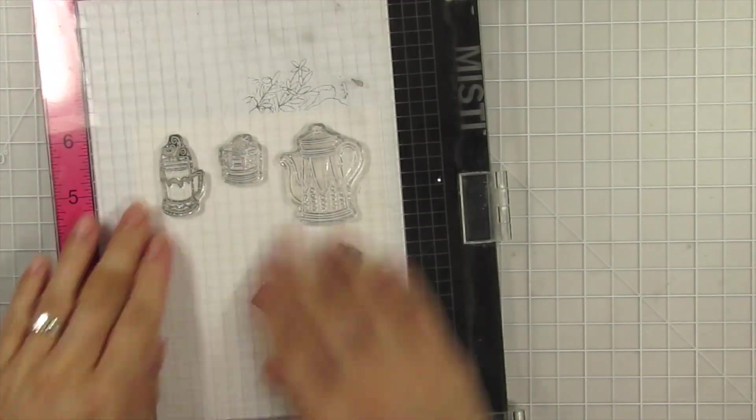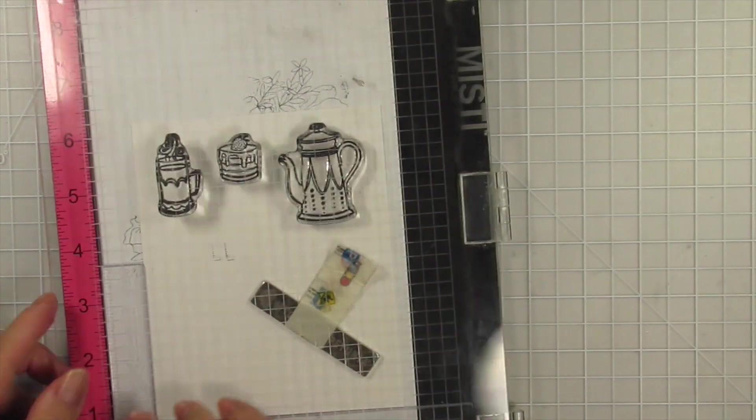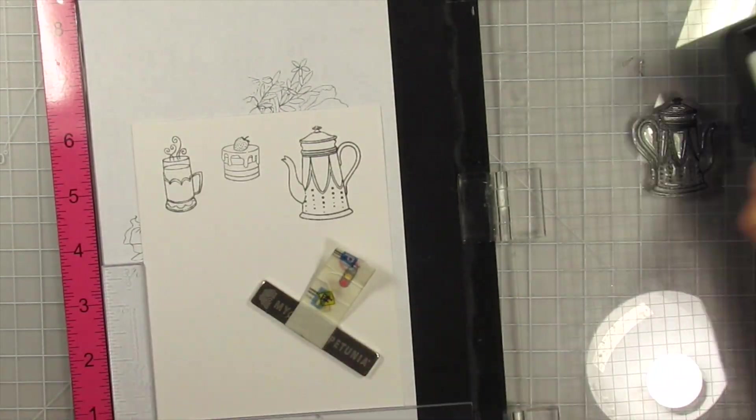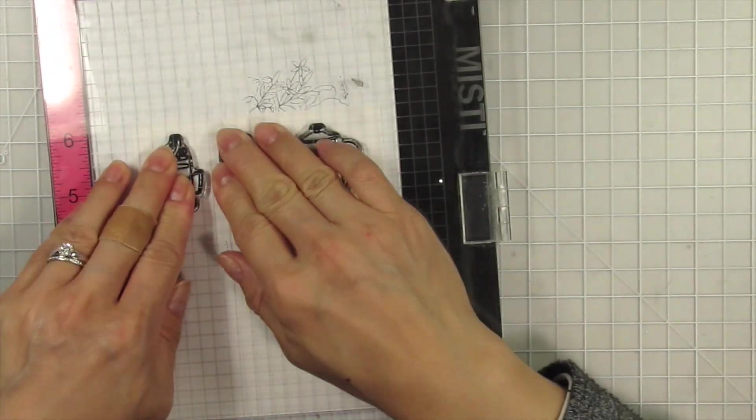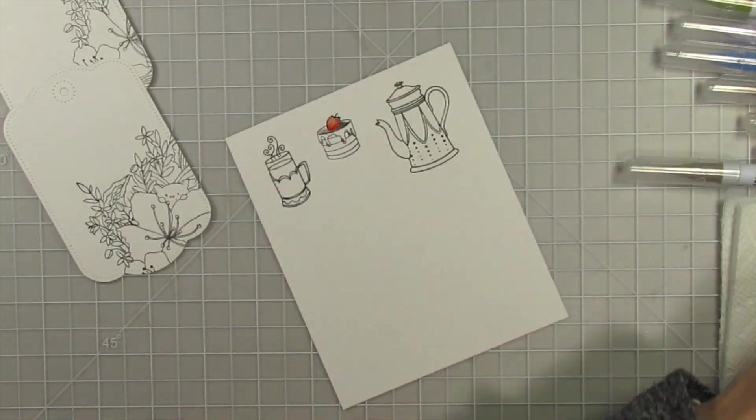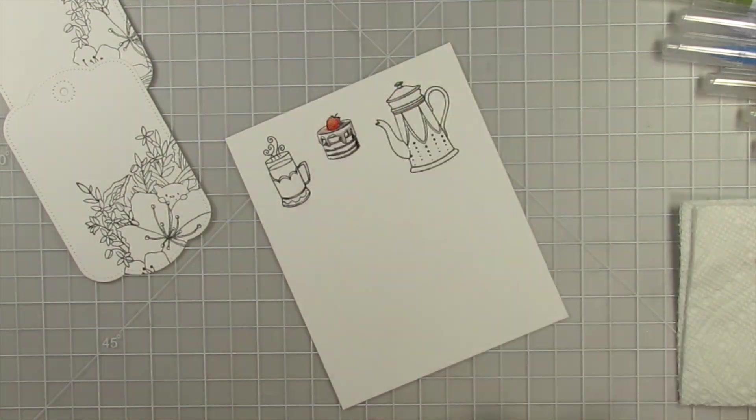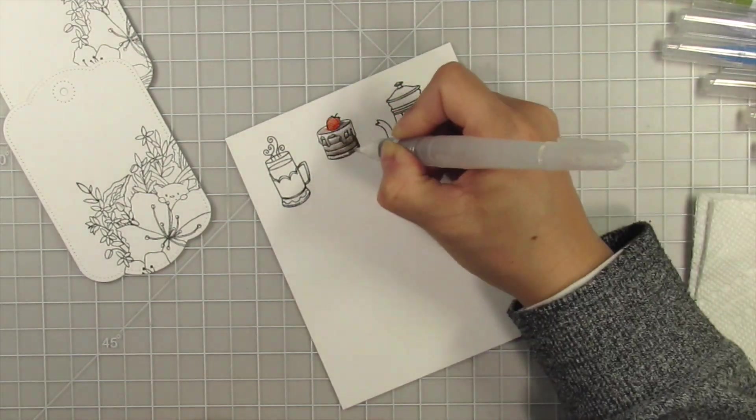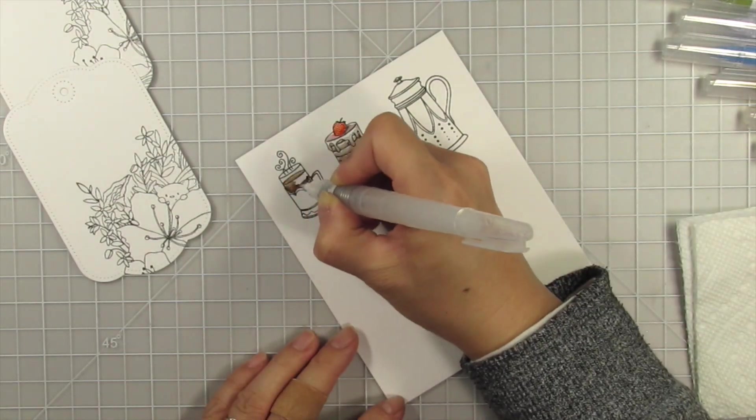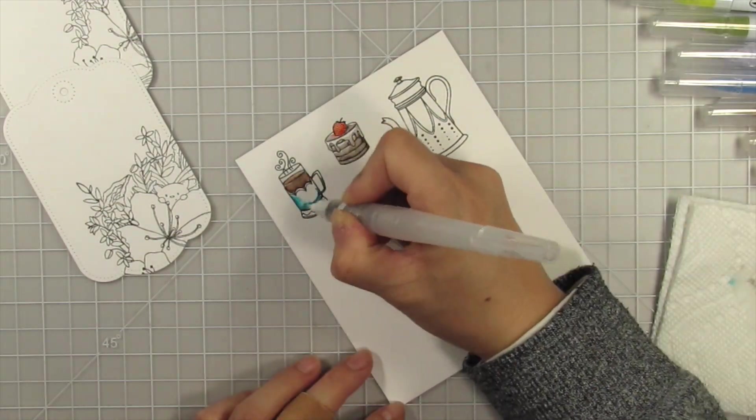I also stamped the images from Positivity and start to watercolor with Zig Clean Color Real Brush markers. This is only my second time using these markers. I've had them forever and never got into them, but I do love watercoloring and everyone tells me these are easy to use, so I'm going to make an effort to make good use of the money I spent on them. After all, I did purchase the full 80 marker set at the time. They released 10 new colors last year, but I won't need those immediately.